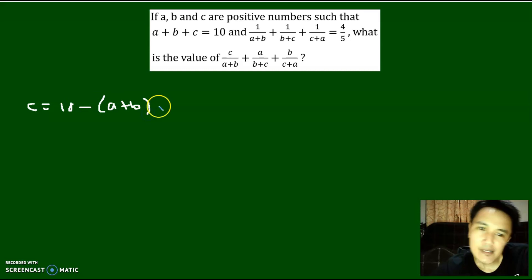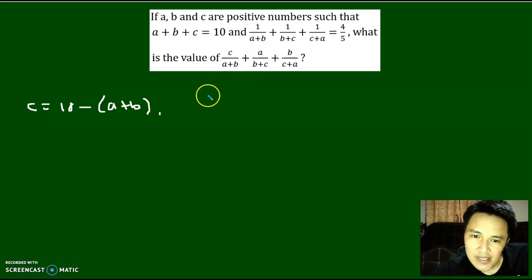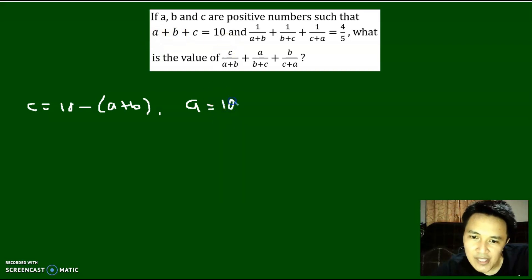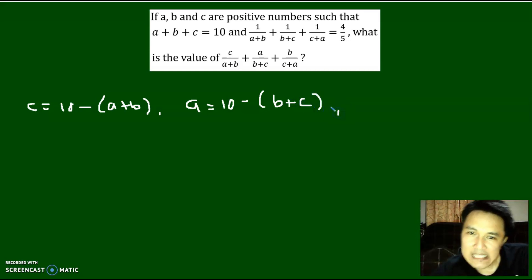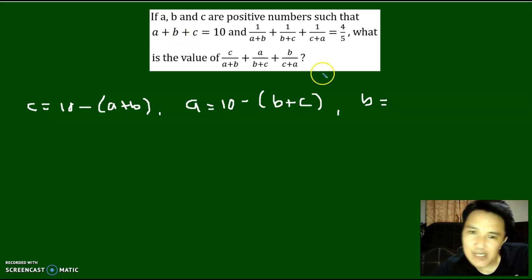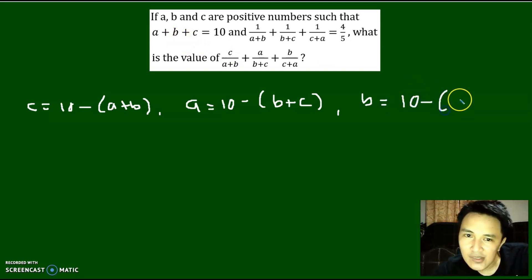Likewise, A here can be written as 10 minus B plus C. And lastly, this B here can be written as 10 minus A plus C.